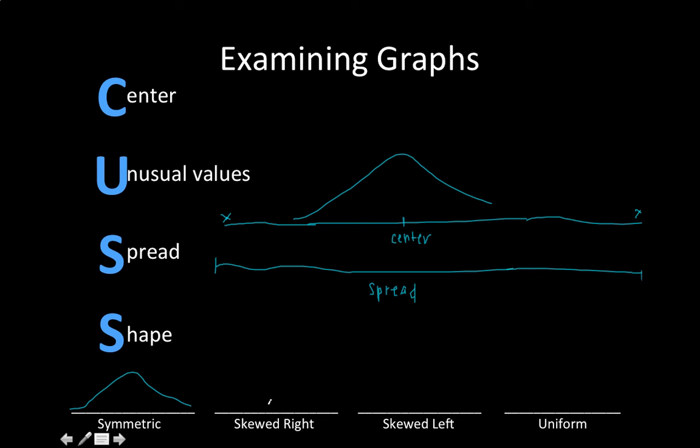Skewed right looks a little bit different. It looks like this. The bulk of the data is on the left side and the tail is on the right side, which is kind of counterintuitive, but just memorize it. And skewed left is obviously the opposite, the bulk of the data being on the right side. And uniform is just a straight line.